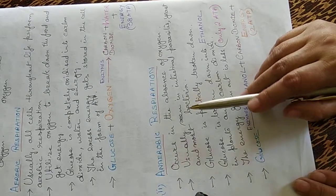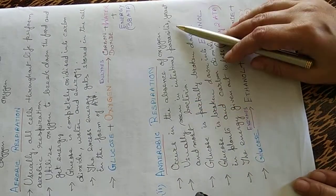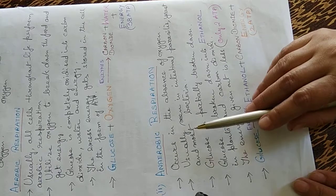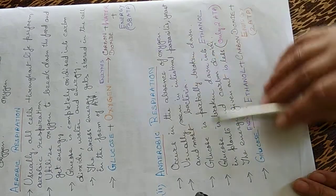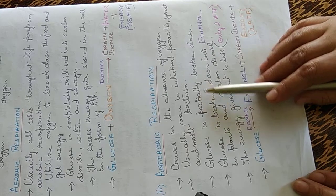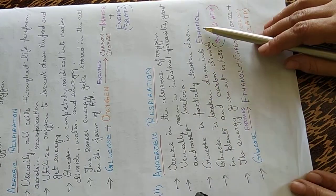Now anaerobic respiration. It occurs in the absence of oxygen. It's usually seen in intestinal parasites, yeast and most bacteria. The glucose is partially broken down here.